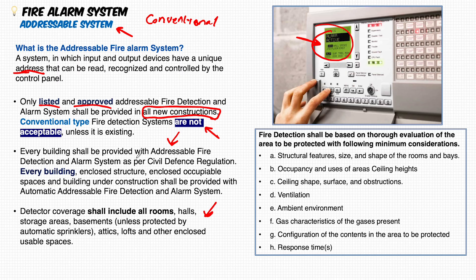Where must the fire alarm system be provided? In schools, hospitals, residential buildings, workshops, or warehouses? Every building in the UAE shall be provided with an addressable fire alarm system — every enclosed structure, enclosed spaces, and even buildings under construction. Temporary offices on construction sites shall also be provided with the automatic addressable fire alarm system.